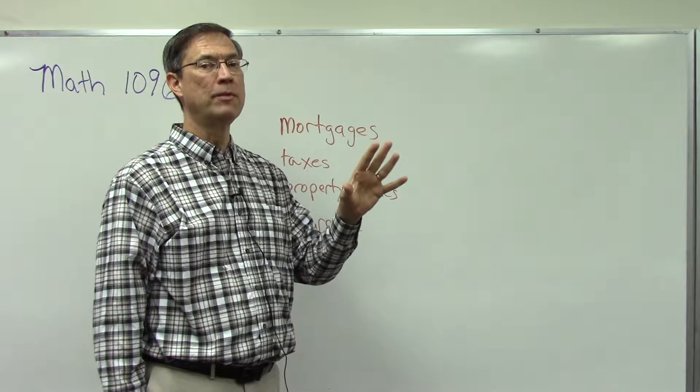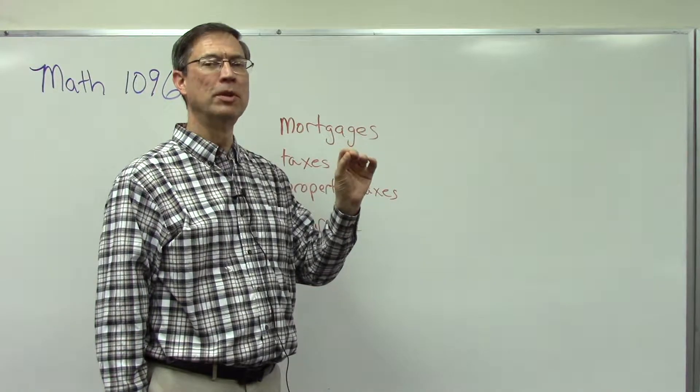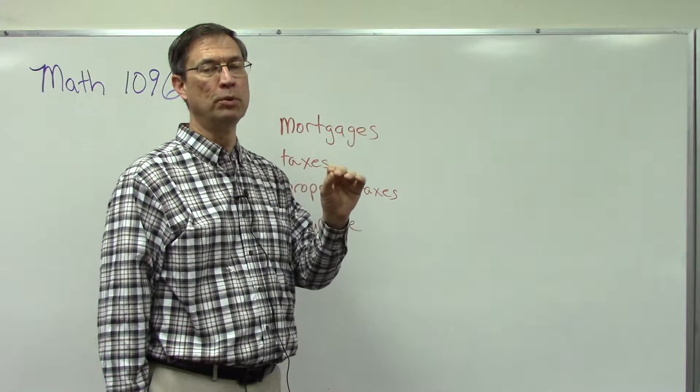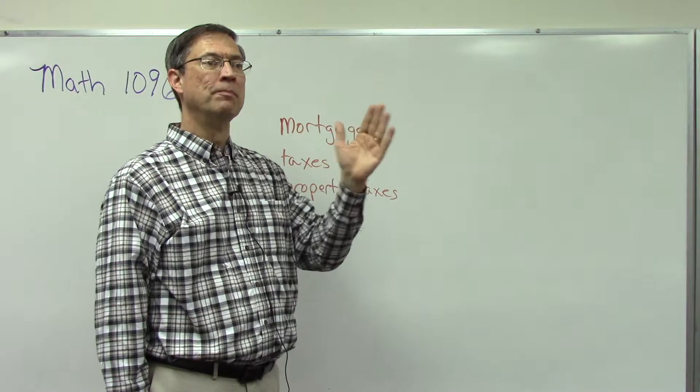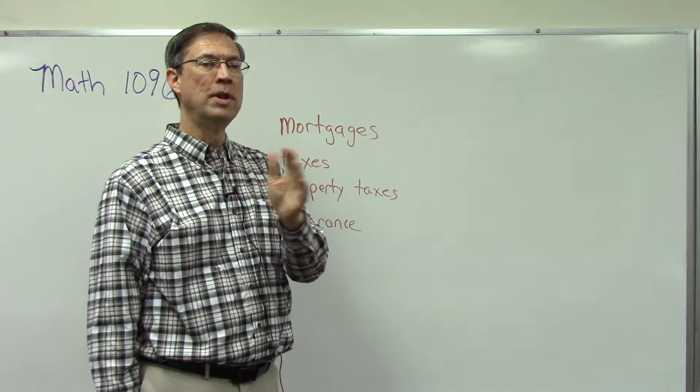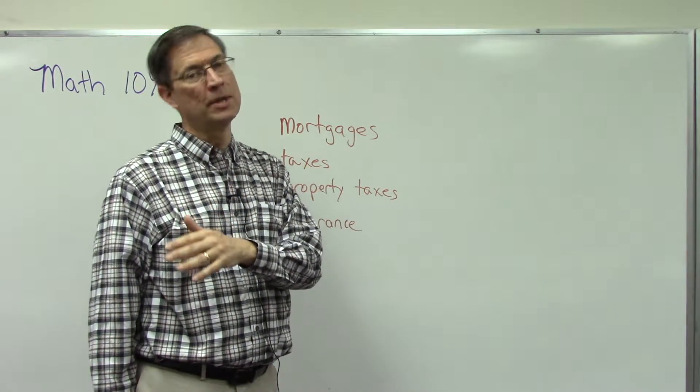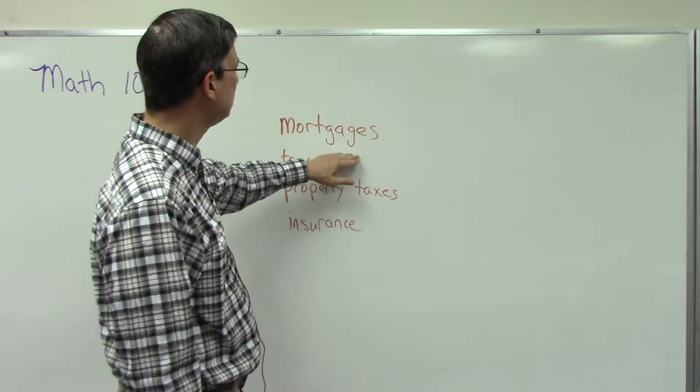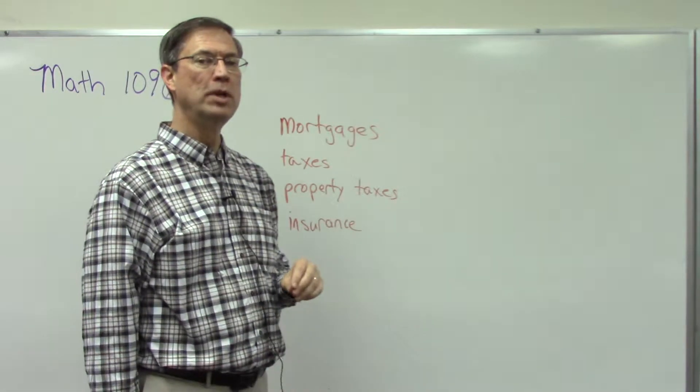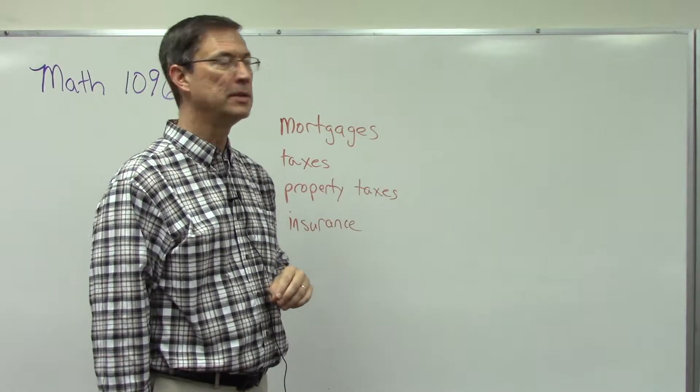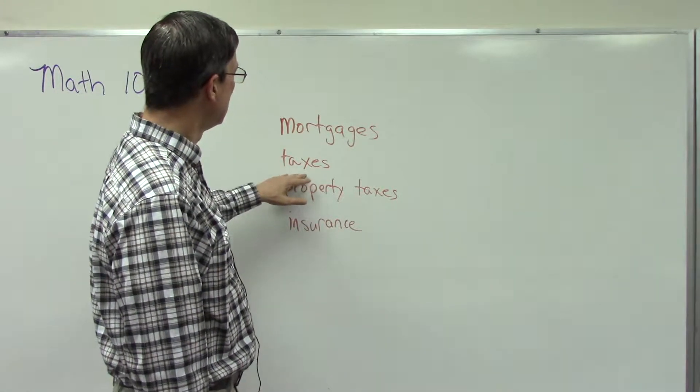They calculate it in such a way that the bank gets the most interest in the first payment, and then the second month they still get a lot of interest and very little bit goes to what's called the principal, the amount you actually borrowed. But as you keep going through the loan, more and more goes to principal and less to interest. There are a lot of calculations in there. I'm going to do a video about pages 7 and 8 in a little bit.